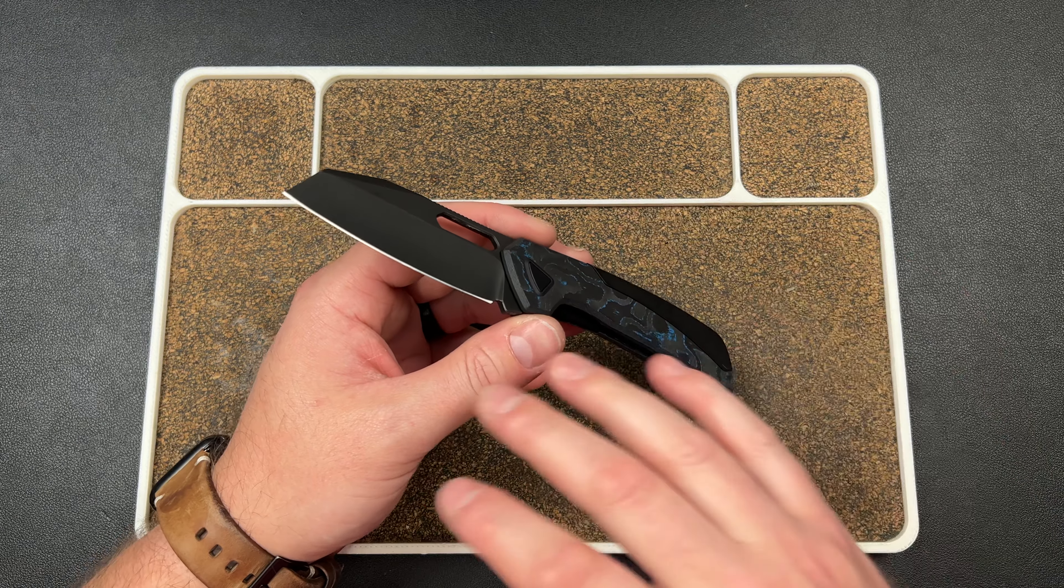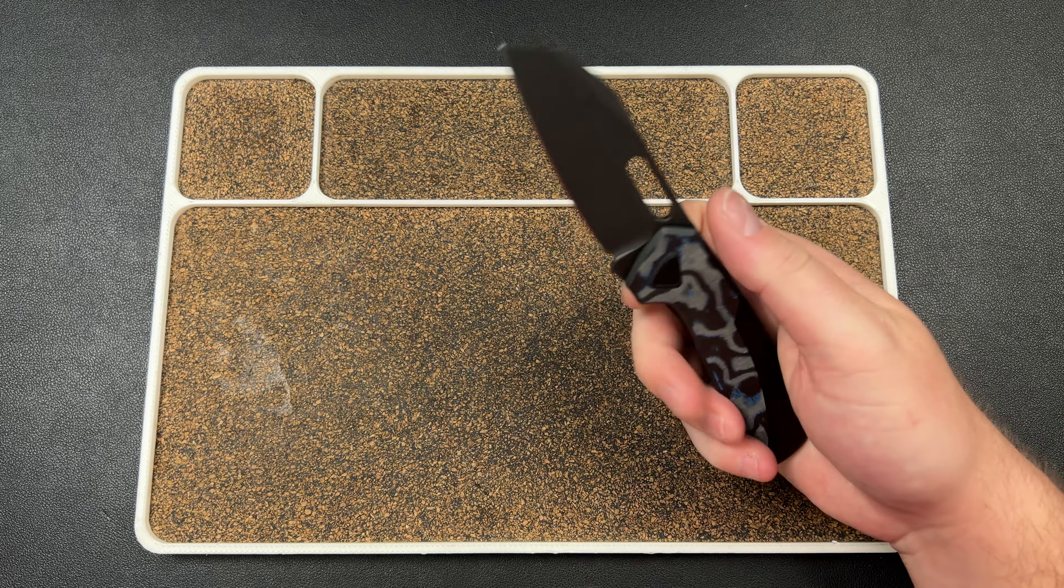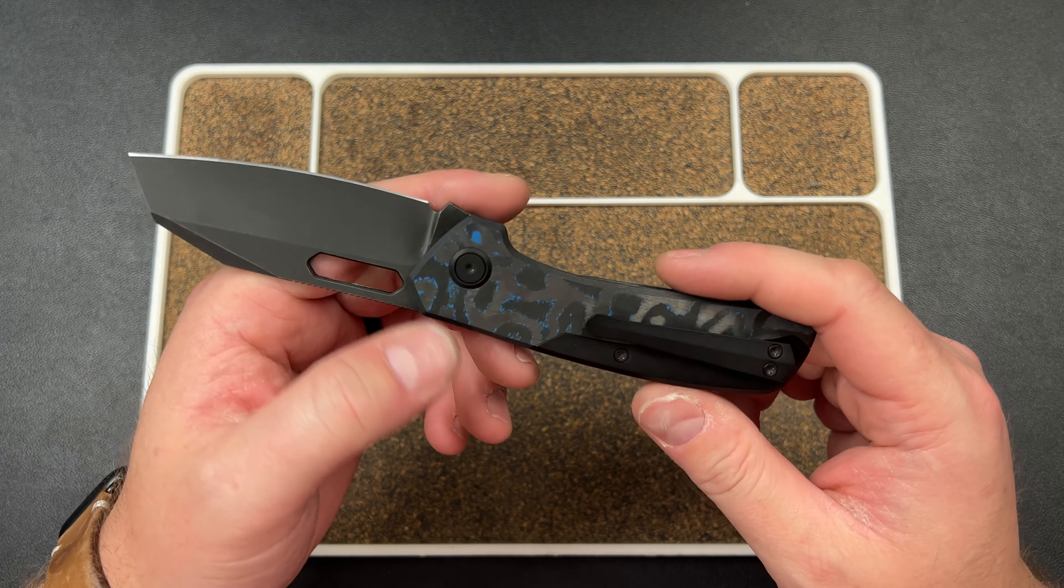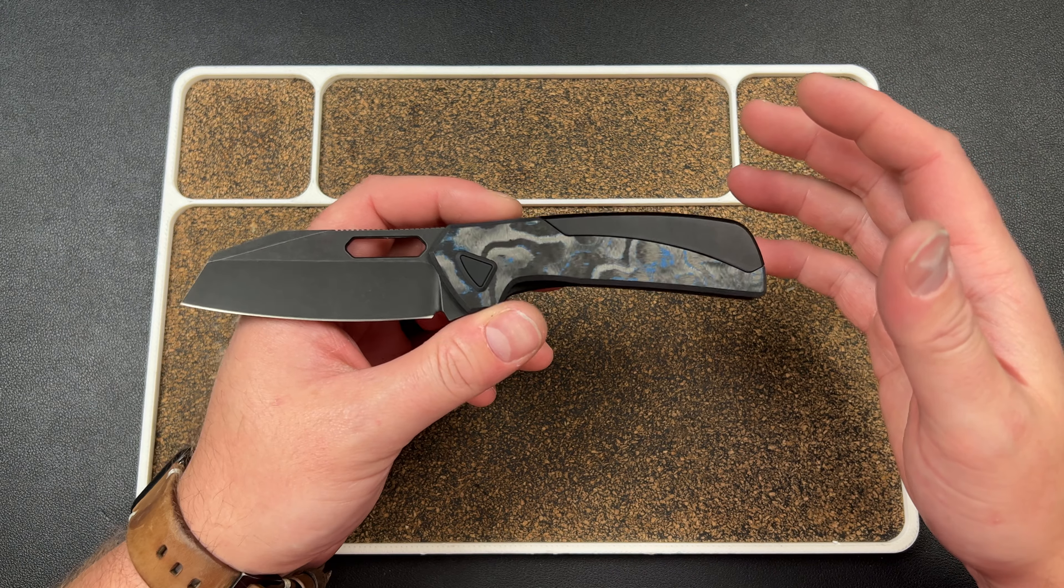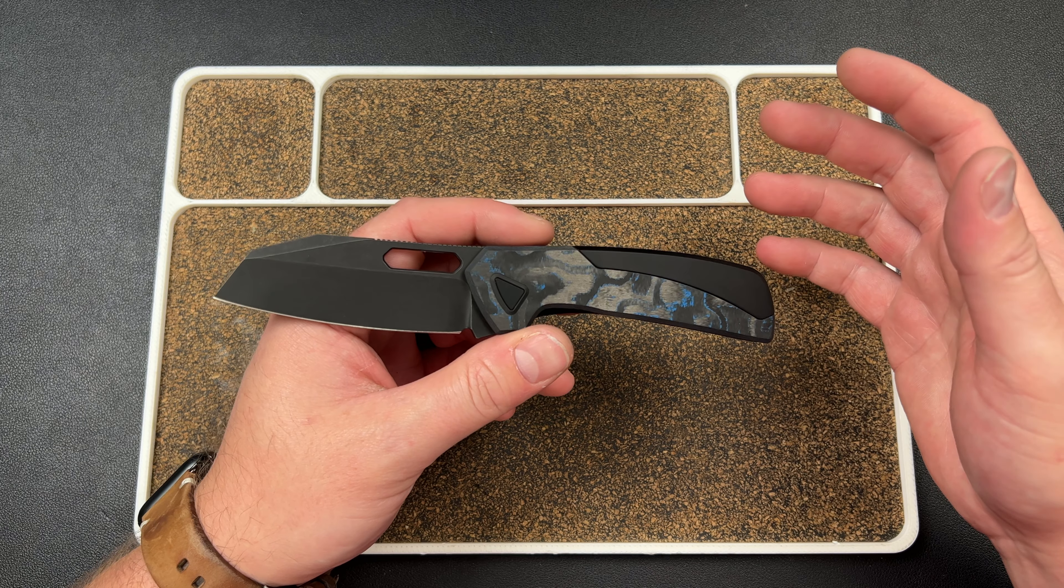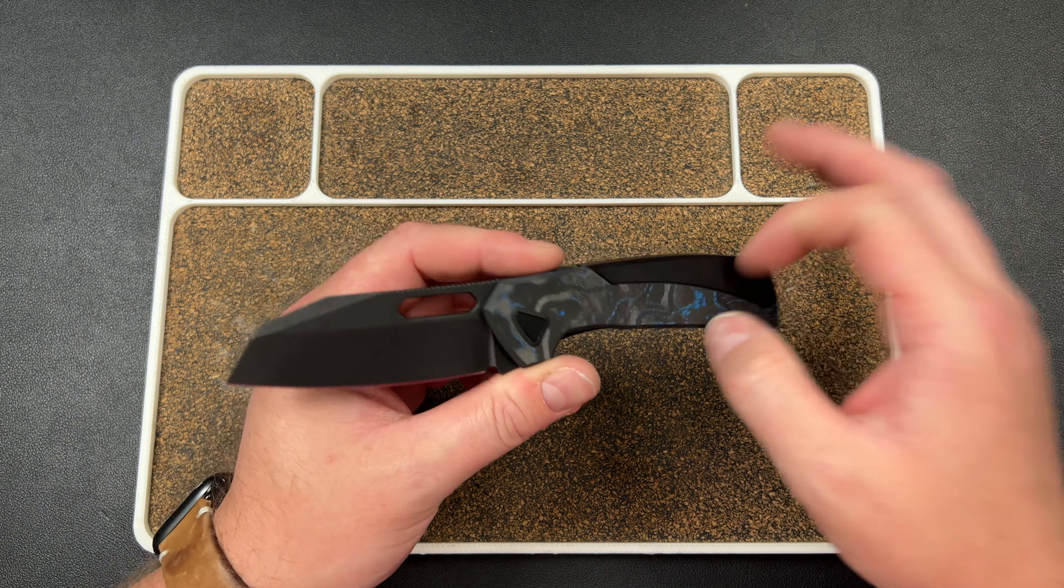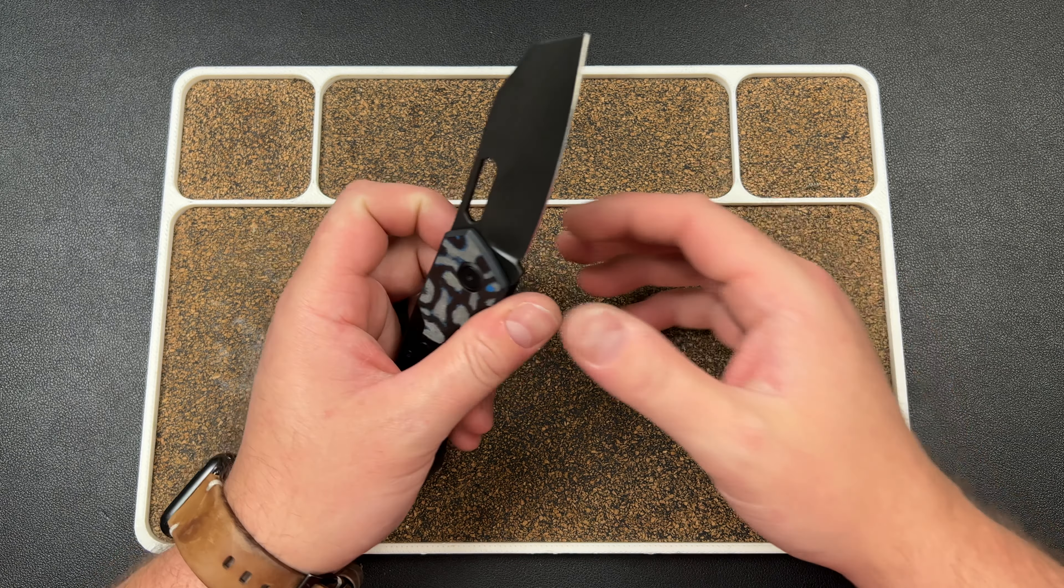Colin added this really cool pivot design here and then we were trying to figure out how can we do a reversible clip on this but not screw up the lines. Just putting two holes here, we thought a lot of people wouldn't like that.